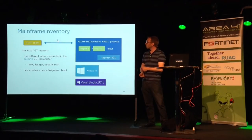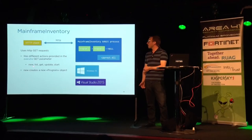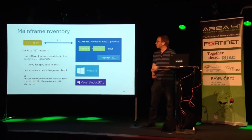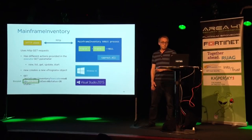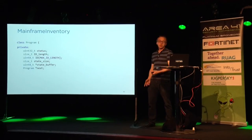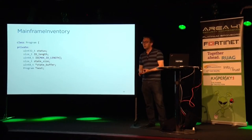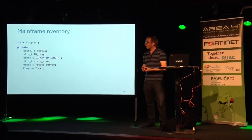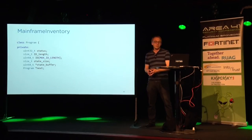Via this HTTP interface you can create new programs, list them, or start programs. For instance, an HTTP request would create a new program with a specific ID. The program class has attributes like status and ID. The length of ID indicates the number of valid bytes in the ID array. Then there is a pointer to a state buffer, and a state size indicating the number of valid bytes in the state buffer, plus a pointer to the next entry in the linked list.